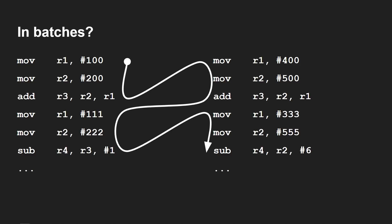What if we ran them in batches? So we could run move 100 into R1, and move 200 into R2, and add R1 and R2 into R3, then switch over to the other program — move 400 into R1, move to R2, add R1 and R2 into R3, and then switch back. But eventually you'll get down to a point where you want to use R3 again — and which R3 is it? Is it the one from the program on the left or the program on the right? Whether you're doing it five instructions at a time or ten, you'll still end up with program errors that just won't work.